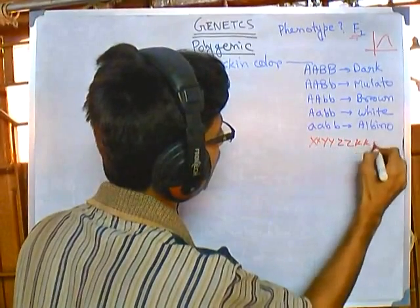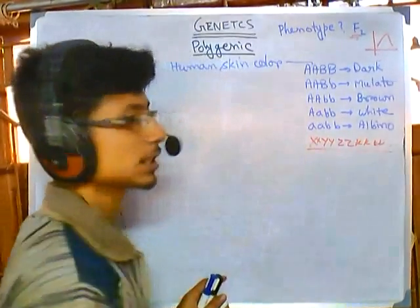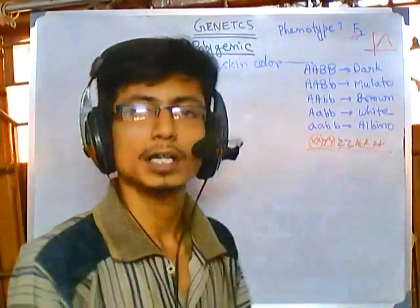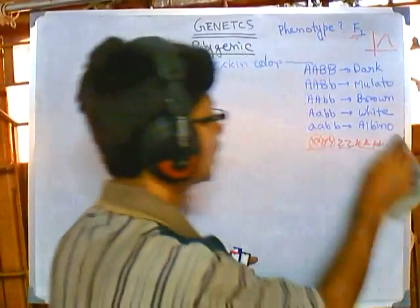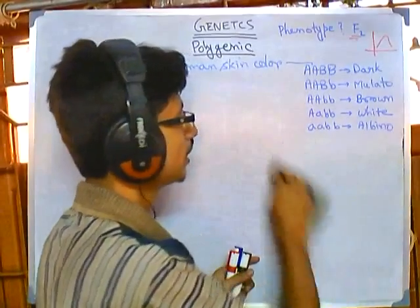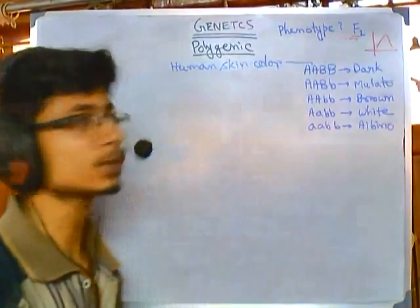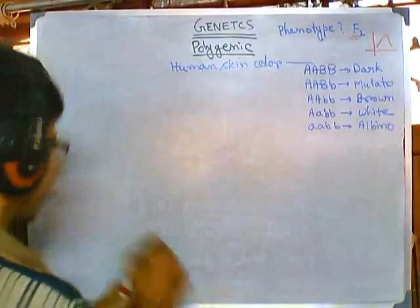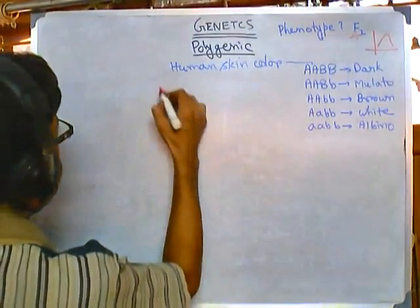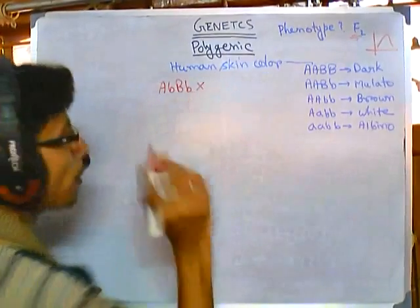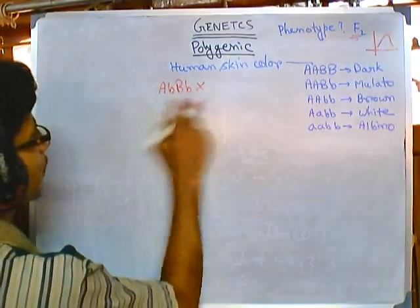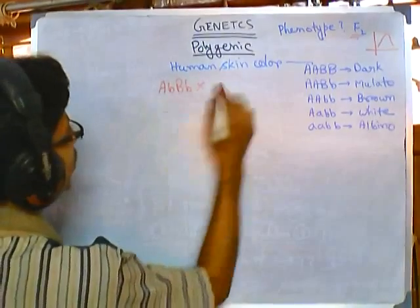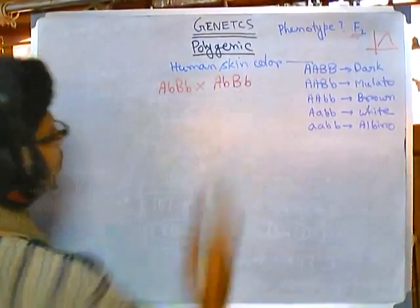So forget that these are different traits. Whether it is written X, Y, Z, K, L — all of these genes are coding for human skin color, because human skin color is controlled by many different genes, not a single gene. That is why it is called the polygenic inheritance pattern. Now let us focus on the problem. In the F1 generation, in the population, a particular cross ratio is most common.